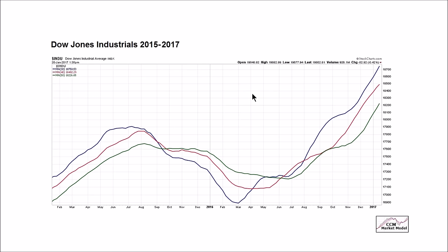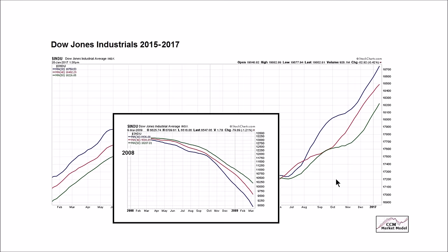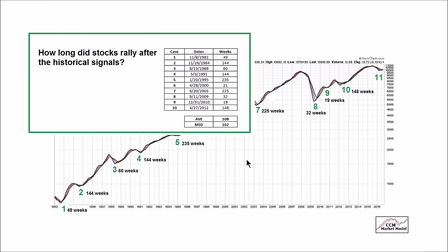Nor does the present day look anything like the early stages of the dot-com bust. Applying this same weekly moving average to the Dow Jones Industrial Average as of January 20th, we have a constructive look. Similar to the S&P 500, the weekly look in the present day really doesn't look anything like the concerning low-probability look for the Dow in early calendar year 2008. We have no idea how the rest of calendar year 2017 will look, nor does anyone else. But typically when you get these bullish turns on these weekly moving averages, good things happen for a long period of time.